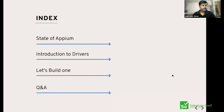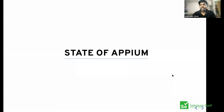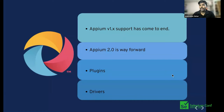Appium has been around for more than six or seven years with many dot versions on Appium 1.x. It has gone through a lot of evolution — each dot release introduced new features and bug fixes across many Android and iOS versions. Appium 1.x is now deprecated, and Appium 2 has been in beta for over a year. It's the way forward and may hit a stable release in a month or so.